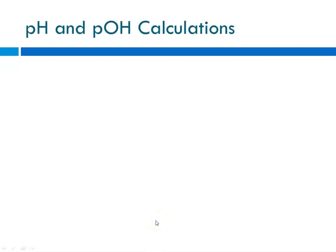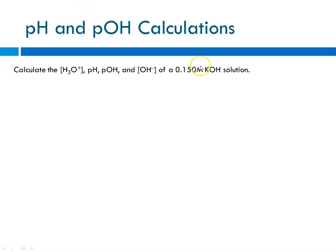Now let's look at a second calculation. Instead of an acid solution, you're given a basic solution. You start with the concentration of hydroxide ion, get to pOH from that, then from pOH to pH, and then from pH to hydronium ion concentration.